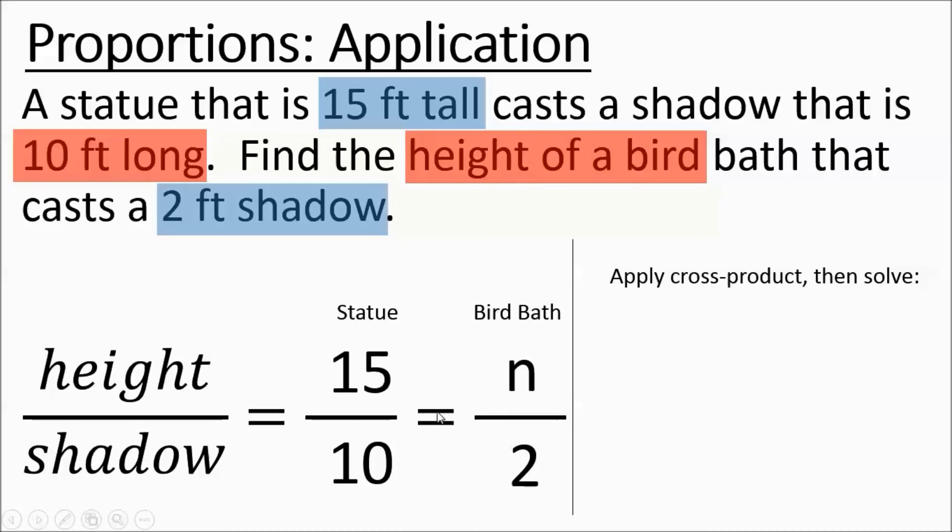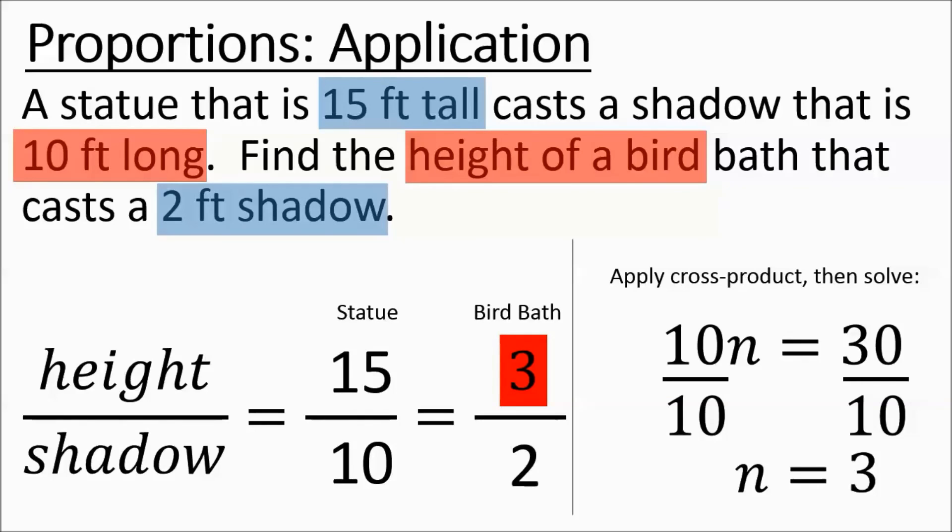10 times n. 15 times 2. 10n. 15 times 2 is 30. We divide out the 10, and we get a 3 again. A lot of 3s involved with these problems. So the birdbath is definitely shorter than the statue. Its shadow is shorter, and its height is shorter as well. It's 3 feet.